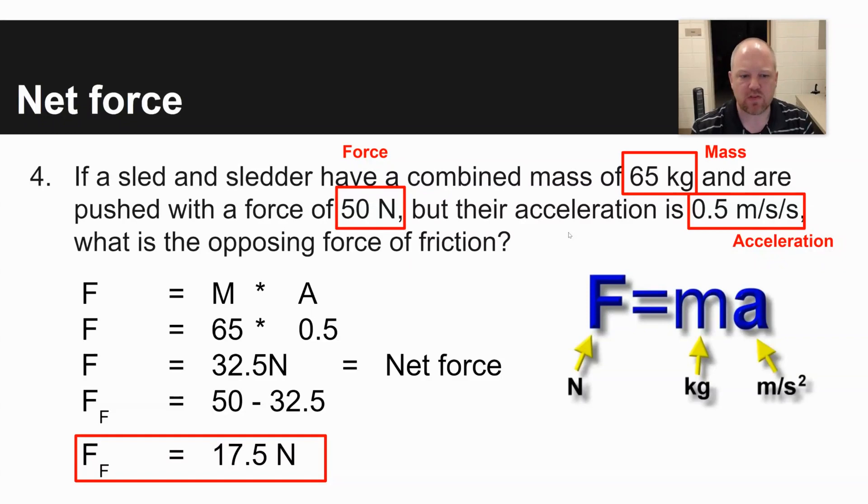The reason your net force is less than your overall force is you have that opposing force of friction. If you wanted to solve for the force of friction, you take the input force 50 newtons minus your net force 32.5 newtons, and you could solve for your force of friction, the difference between the two, that is 17.5 newtons.